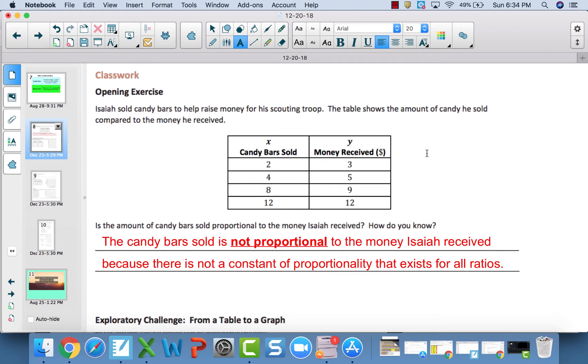Hopefully through your work with previous lessons, you got that these are not proportional because there is not a constant of proportionality that is true for every ratio. Looking at 12 to 12, that would be a constant of 1, but 2 times 1 is not 3. There is no constant number that exists for each ratio. This is not a proportional relationship.